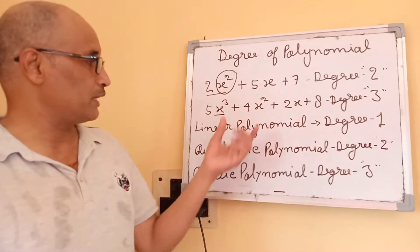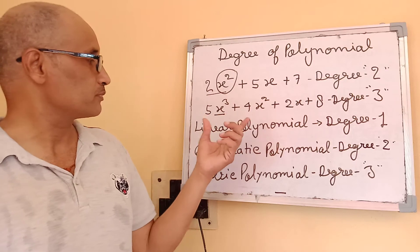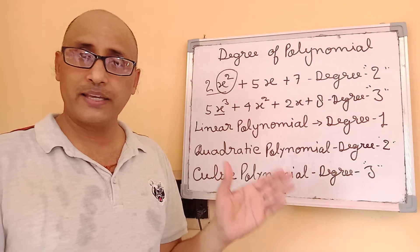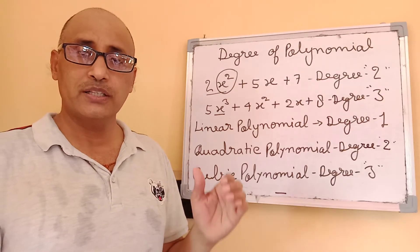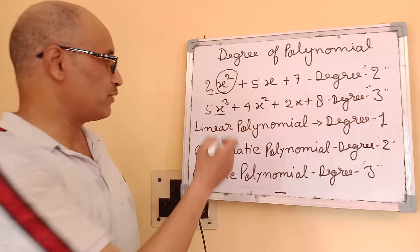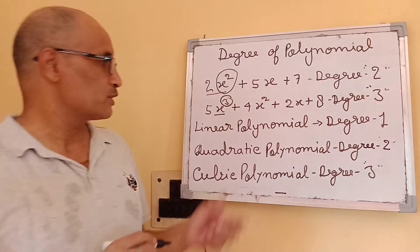Similarly, if you see the second equation, we find again one variable x. And if you see the highest power, you will find that the highest power is 3.